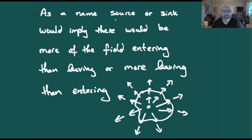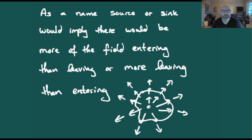As the name suggests, if we have a source or a sink it implies that more of the field is entering than leaving the curve, or more is leaving than entering. If we imagine a point charge for an electric field, it's producing an electric field going out radially in all directions, so we get more leaving than entering — this is our quintessential example of having a source.